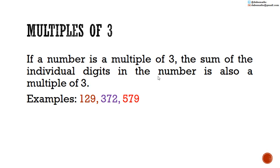The rule says: if a number is a multiple of 3, the sum of the individual digits in the number is also a multiple of 3. Let me show you what that means using three examples.